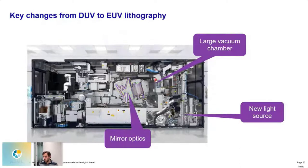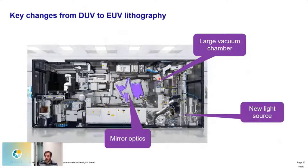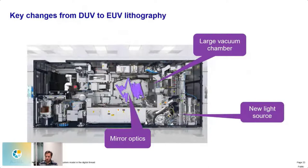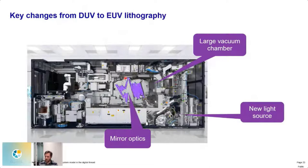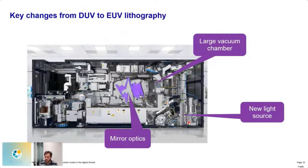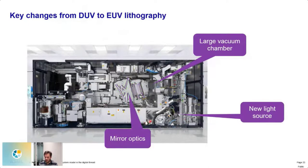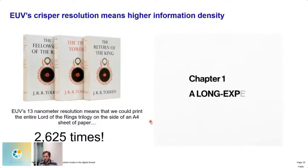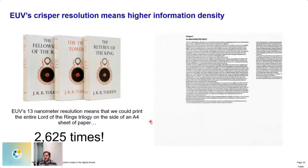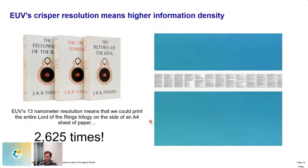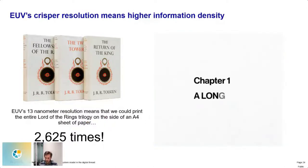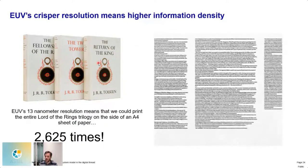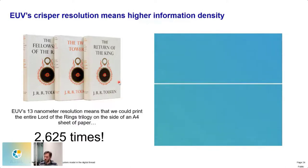And lately, now that we are in extreme ultraviolet, so I should just explain, this is deep ultraviolet light and extreme ultraviolet. So extreme is shorter wavelength than deep, if you're wondering. But in order to achieve a consistent image with extreme ultraviolet light, we had to make the exposure chamber, we had to achieve a near vacuum, because the air molecules get in the way, obviously. We also have a new light source, which is much stronger, I'll show that in a moment, and some new mirror optics I'll also cover just in a moment. So to show you what this really means, you can do all of that. So 2625 times the Lord of the Rings trilogy on the edge of an A4 paper, which I think is quite remarkable.